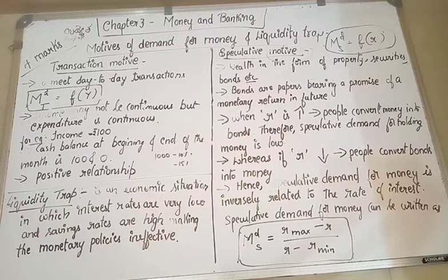Now, primarily, we say that there are three motives for the demand for money. Three motives are, first one, transaction motive. Second one, precautionary motive. Third one is the speculative motive. Now, precautionary motive, that is the second motive, is not in the syllabus. Transaction motive and speculative motive - so for the examination purpose, we will study only these two.